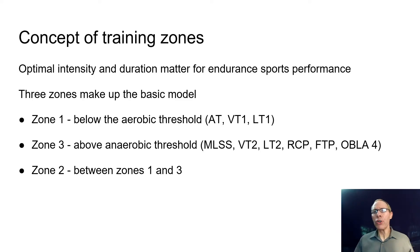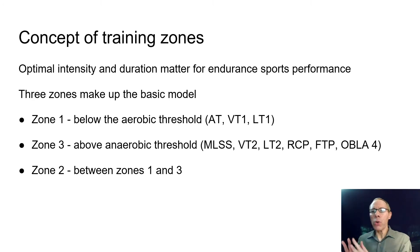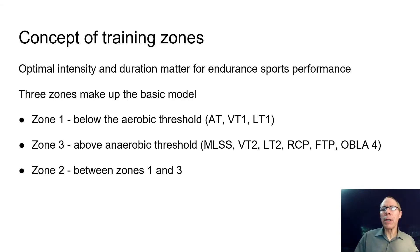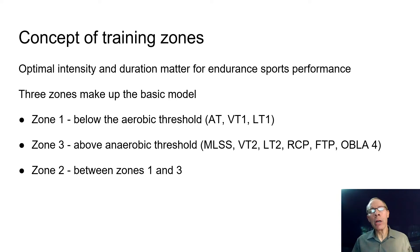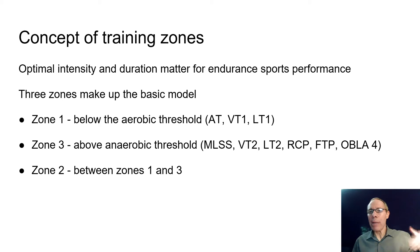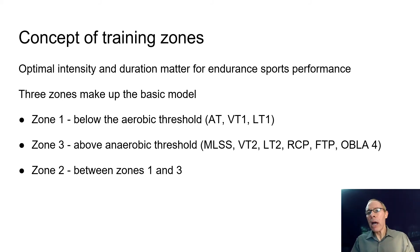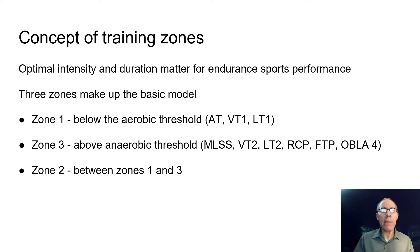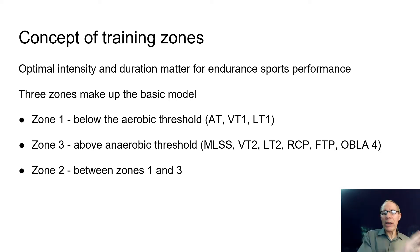One of the key concepts in endurance sports and training is the three zones of intensity. Zone one is felt to be below the aerobic threshold, a very easy zone where most of training should occur. Zone three is the intense anaerobic threshold and above zone where a small amount of time is felt to be very important for high intensity zone training. Zone two is the intermediate zone between one and three.